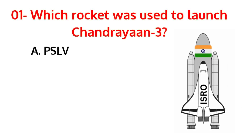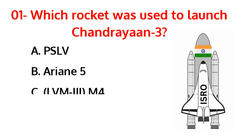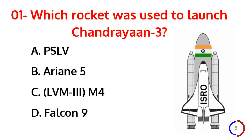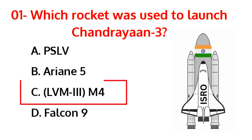Which rocket was used to launch Chandrayaan-3? The correct answer is option C, LVM-3 M-4.